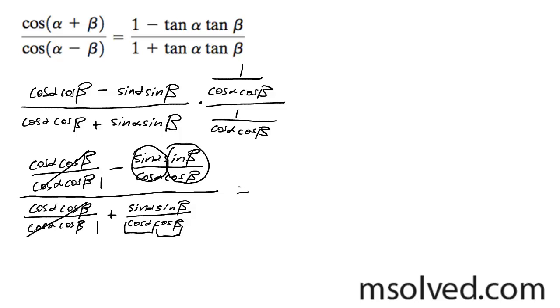So we end up with one minus tangent alpha tangent beta all over one plus tangent alpha tangent beta. That's how we prove it.